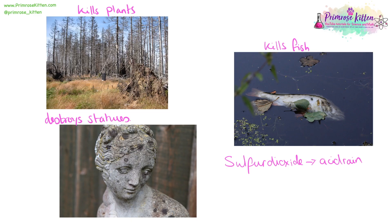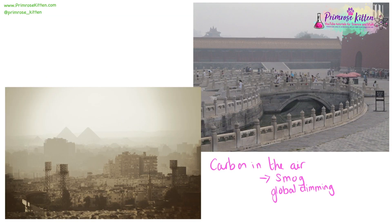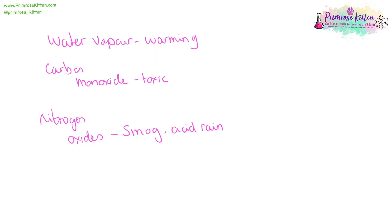One of the major pollutants is sulfur dioxide. When it goes up into the atmosphere and dissolves in clouds, it comes back down as acid rain. This affects a wide range of things: it hurts animals that come into contact with it; if a lake, ocean, or pond becomes too acidic it starts to kill fish and plants; plants are going to die from acid rain on them; and it also destroys limestone statues, which dissolve in the acid rain. Too much carbon in the air leads to large levels of smog and global dimming, particularly prevalent in developing countries — when I was in Beijing it was really hard to see out the window because it was so smoggy. Water vapor contributes to the warming of the planet, carbon monoxide is a toxic gas, and nitrogen oxides contribute to both smog and acid rain.